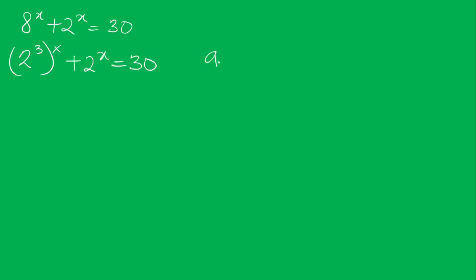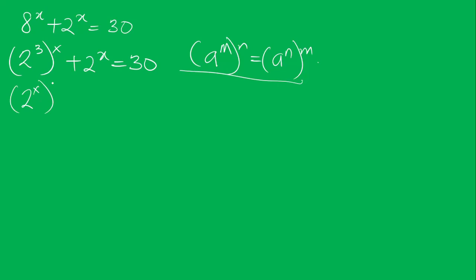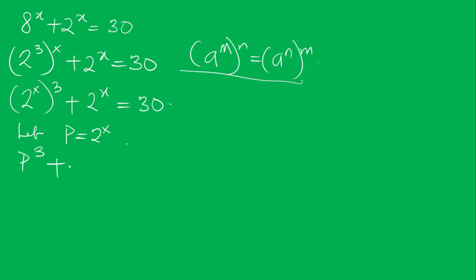Now according to the law of indices, if you have a to the power m, to the power n, it is the same thing as a to the power m times n. So we interchange and apply this, giving us 2 to the power 3X plus 2 to the power X is equal to 30. Now let P be equal to 2 to the power X, so anywhere we see 2 to the power X we replace it with P. So we have P to the power 3 plus P is equal to 30.